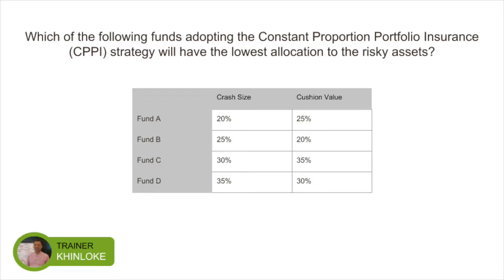This example shows that you are being given the crash size and the cushion value of four funds: A, B, C, and D.